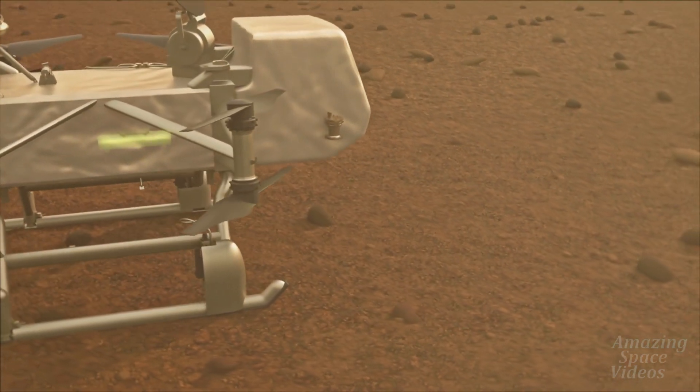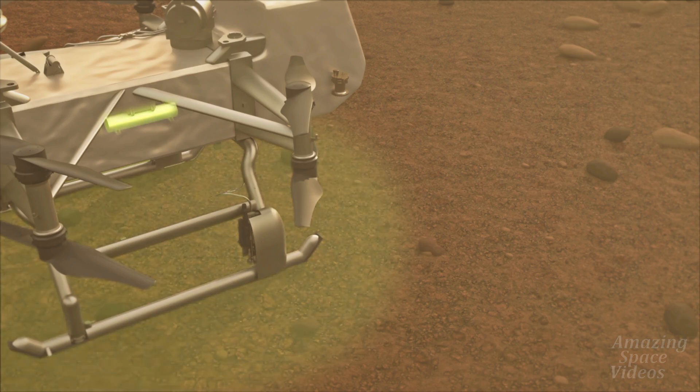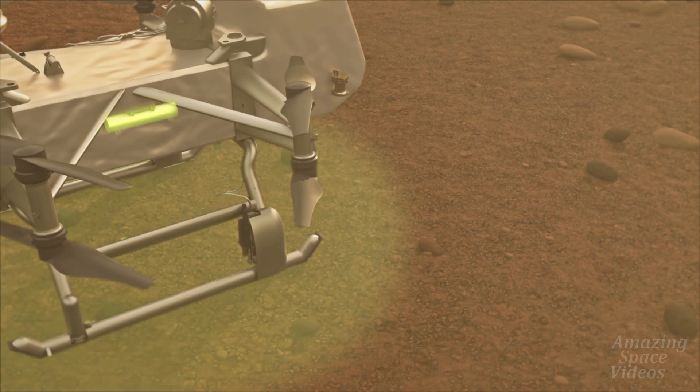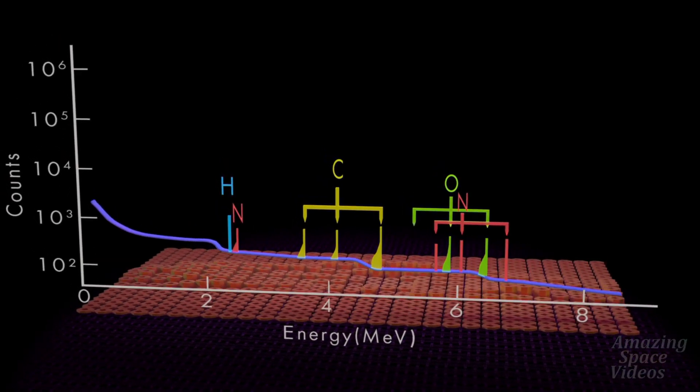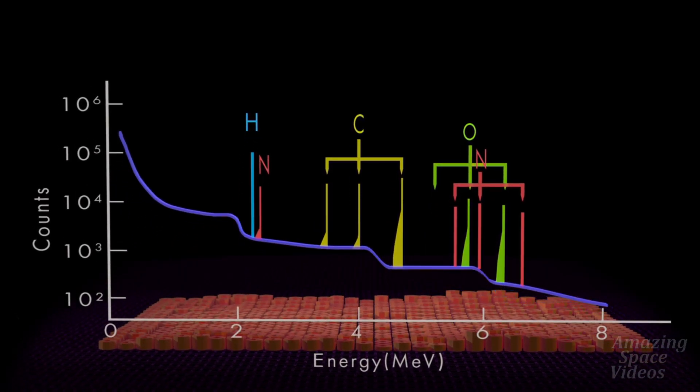At each new landing site on Titan's surface, Dragonfly uses a pulsed neutron generator and onboard gamma-ray sensor to detect key elements such as carbon and hydrogen in organic materials or oxygen in water ice.